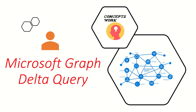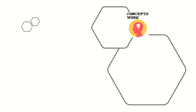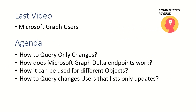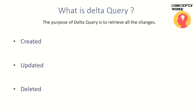Hi guys, hope you're all doing well. Welcome back to our series of Microsoft Graph and in this video, we are going to talk about Delta queries — the fundamental behind querying only the changes which are implemented. In the last video, we discussed about Microsoft Graph users and all the methods available for creating, deleting, or updating a user object. The agenda of this video will be knowing how to use Delta queries, what is the purpose of Delta endpoints, and how to only get the updated attributes as a response from Graph API.